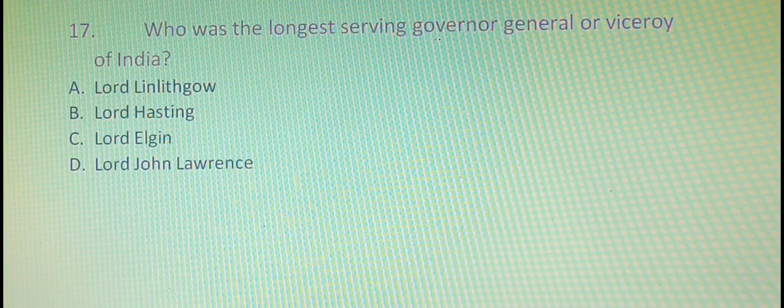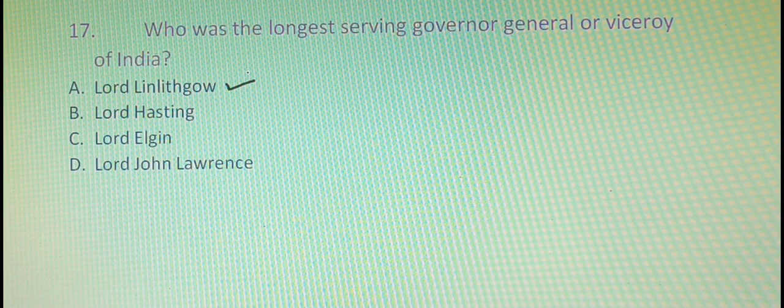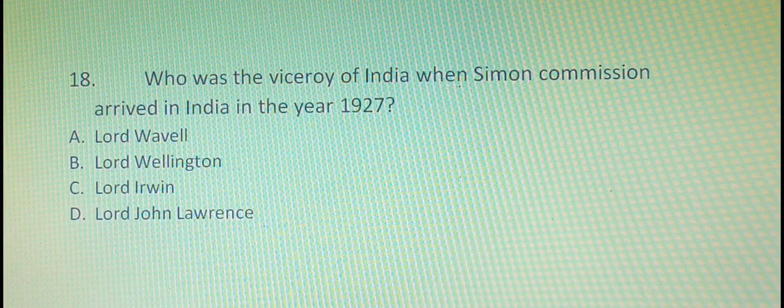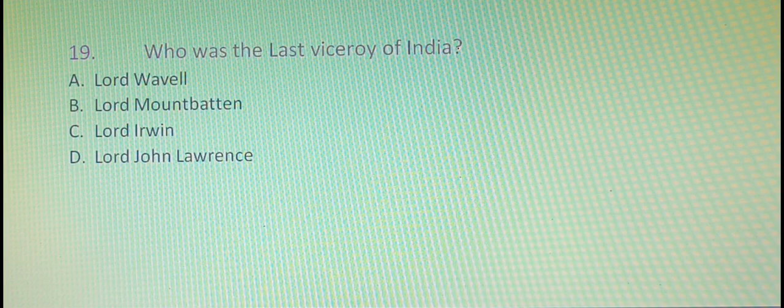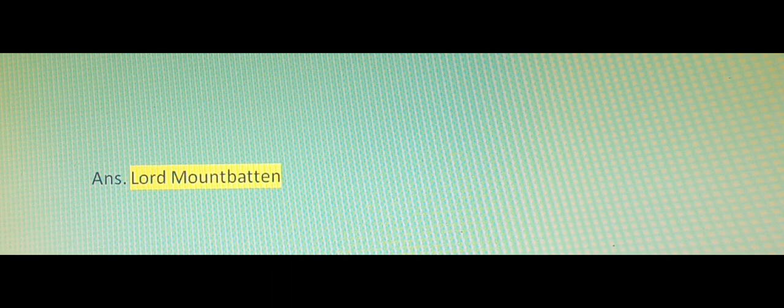The seventeenth question is: who was the longest serving Governor General or Viceroy of India? The right answer is option A, that is Lord Linlithgow. The eighteenth question is: who was the Viceroy of India when the Simon Commission arrived in India in the year 1927? The right answer is option C, that is Lord Irwin. The nineteenth question is: who was the last Viceroy of India? The answer is option B, that is Lord Mountbatten.